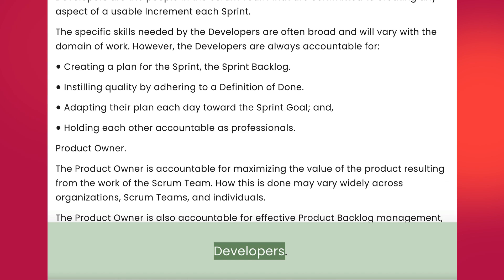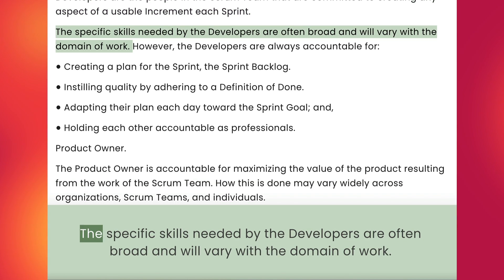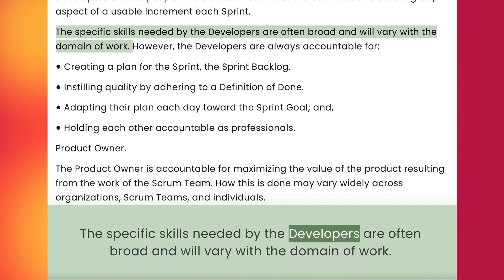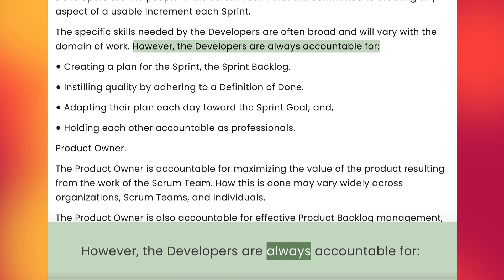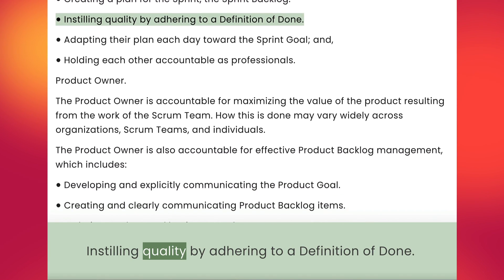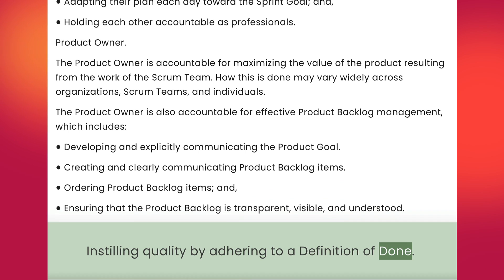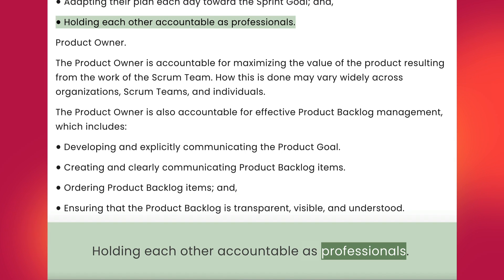Developers. Developers are the people in the Scrum team that are committed to creating any aspect of a usable increment each sprint. The specific skills needed by the developers are often broad and will vary with the domain of work. However, the developers are always accountable for: creating a plan for the sprint, the sprint backlog; instilling quality by adhering to a definition of done; adapting their plan each day toward the sprint goal; and holding each other accountable as professionals.